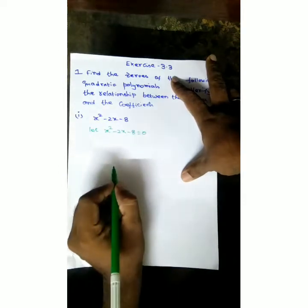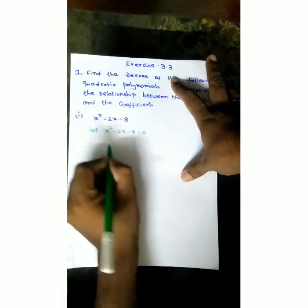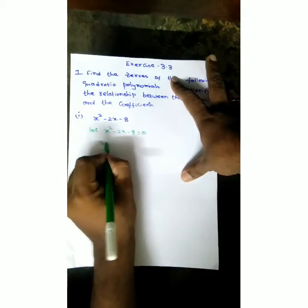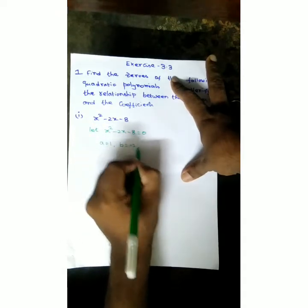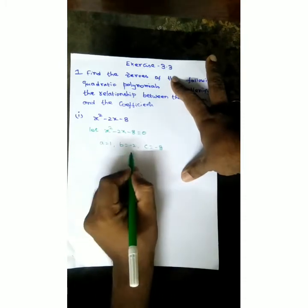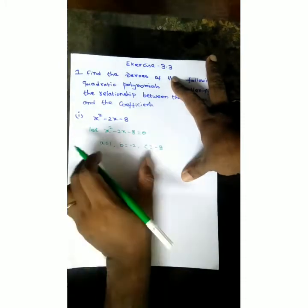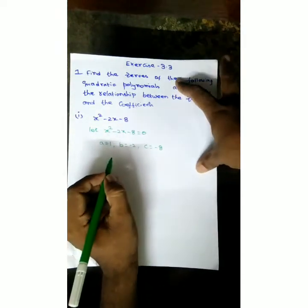So now we need to factorize. Here we compare to ax square plus bx plus c. The a value is 1 (from 1x square), b value is minus 2, c value is minus 8. So a is 1, b is minus 2, c is minus 8. So we have these three values. First we factorize.